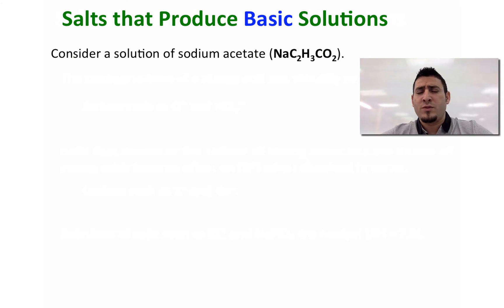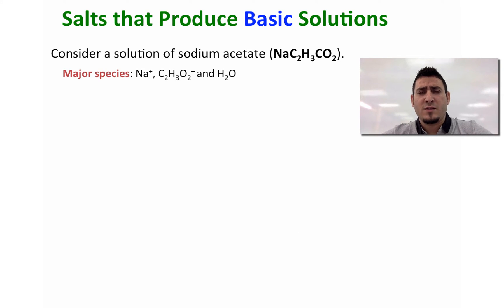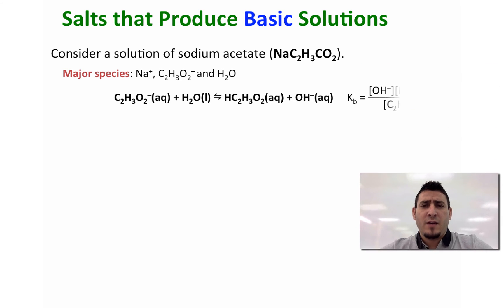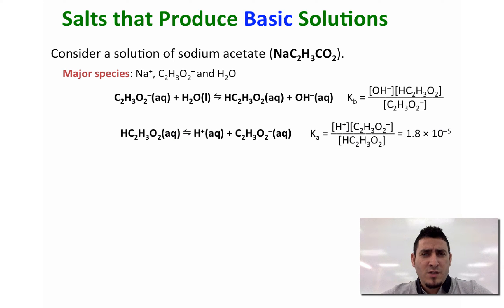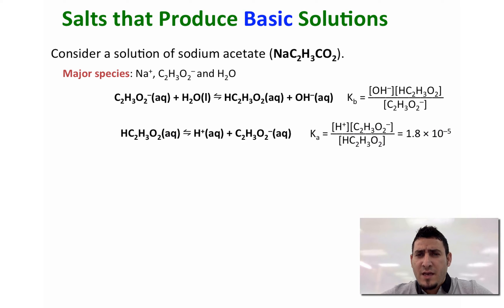Now let's discuss salts that will produce basic solutions. Consider a solution of sodium acetate. The major species of sodium acetate solution are the sodium ion, the acetate ion, and water. If we write the equilibrium of acetate with water, it gives acetic acid and the hydroxide ion. We can also look at the dissociation equilibrium of acetic acid, which gives H+ plus acetate. The expression of Ka is equal to the concentration of H+ multiplied by the concentration of acetate, divided by the concentration of the acid. The Ka is equal to 1.8 × 10⁻⁵.